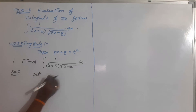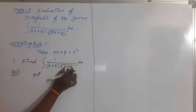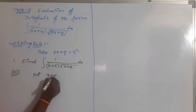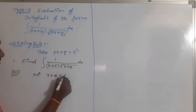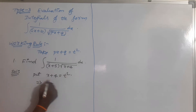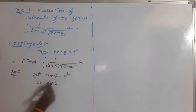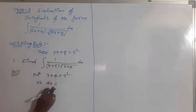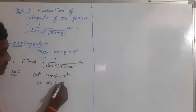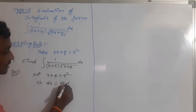What is the working rule? Take the inside term of the root equal to t squared. So take x + 4 = t squared, then take the derivative on both sides: derivative of x is dx, derivative of constant is 0, and derivative of t squared is 2t dt.